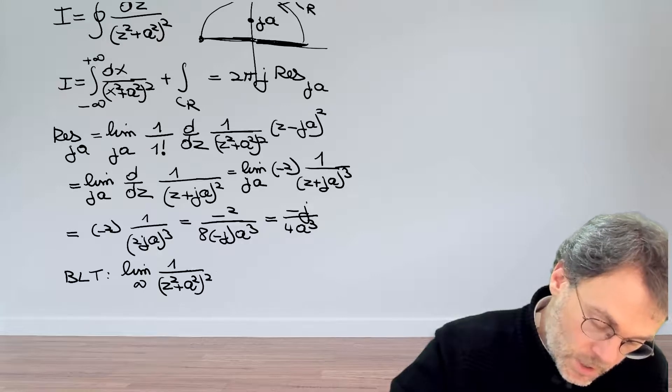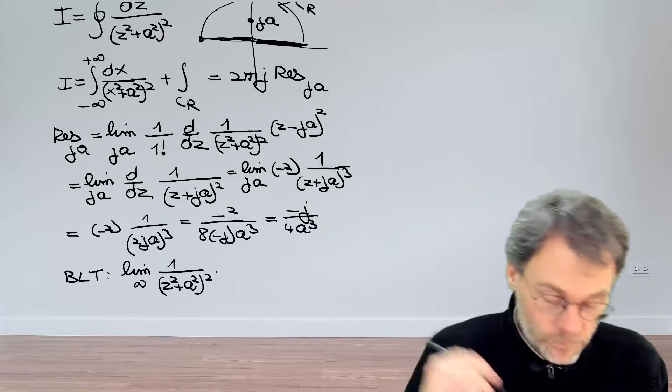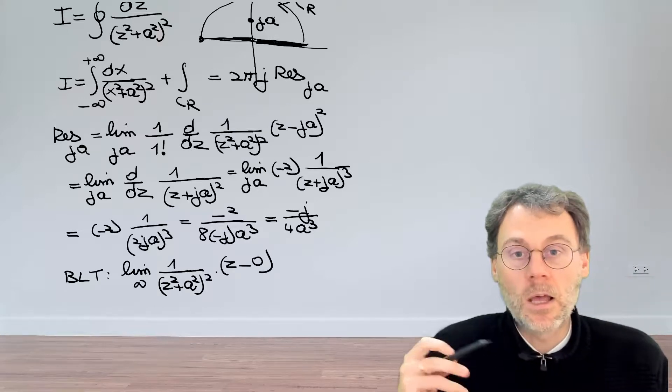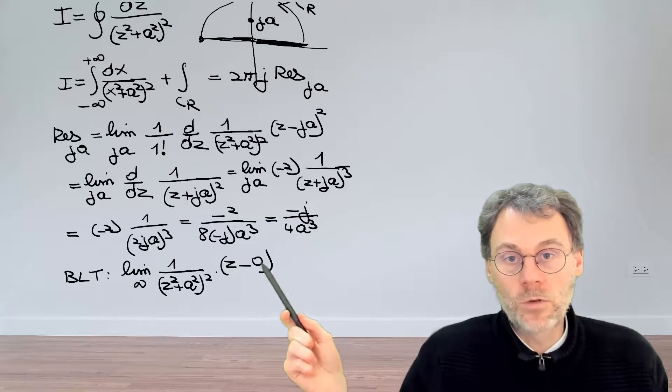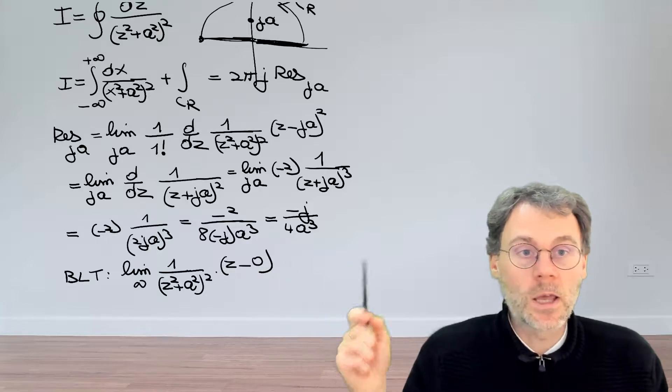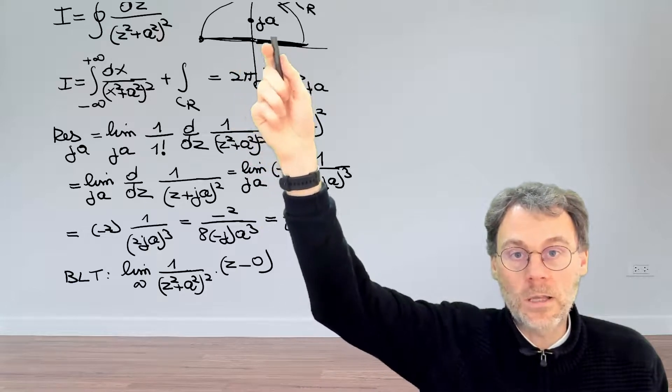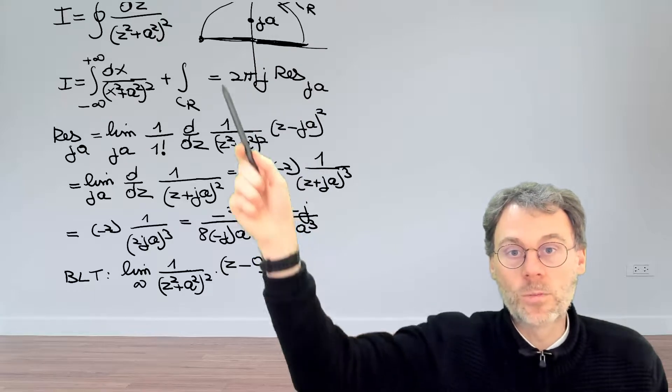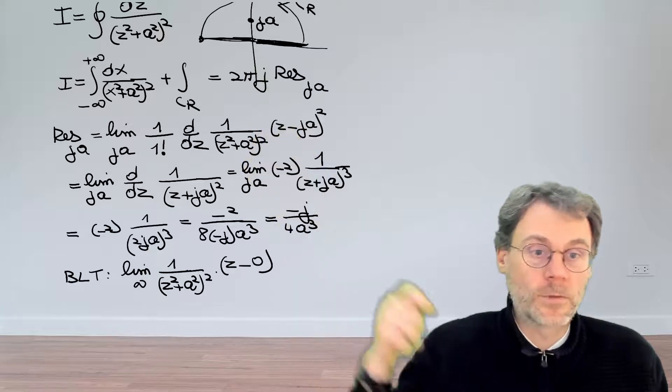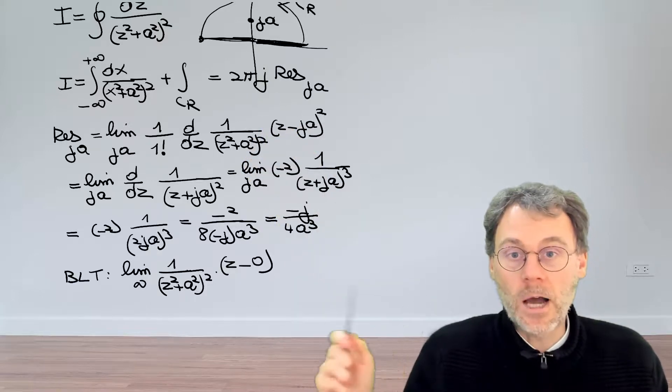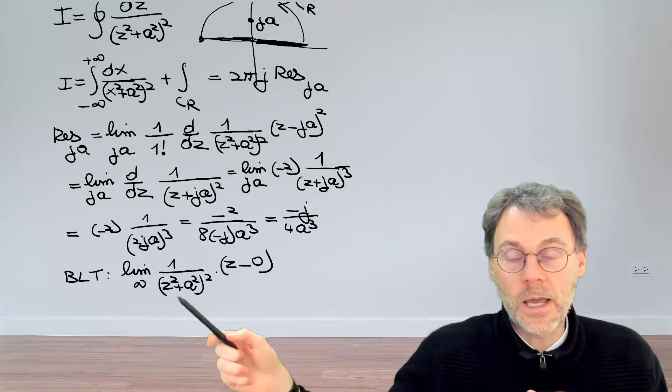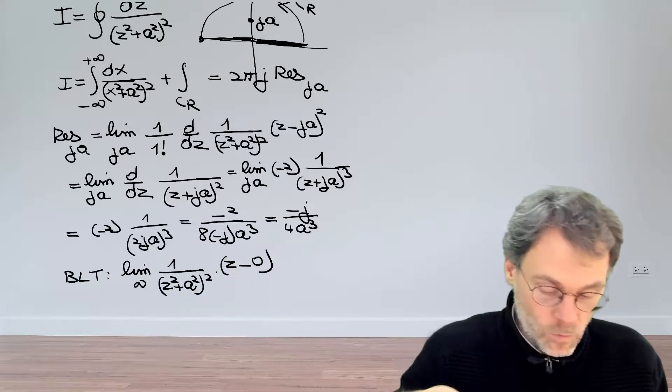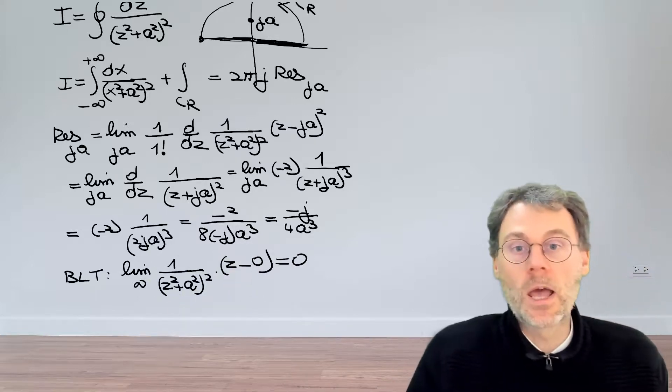So if z approaches infinity of our integrand, so that's z squared plus a squared squared. But not just our function f(z), we should not forget to multiply it by z minus zero in this case. So let's not get confused, make sure to put in zero here and not ja or something. ja is related to the residues that we're calculating at the singularities. The point that we need to fill in here, zero in this case, corresponds to the origin of the circle. So this is what we need to fill in. Anyhow, the power of z in the denominator is much bigger than the one in the numerator, so at infinity this whole thing will just collapse, becomes zero. And this also means that the contribution from that part vanishes.